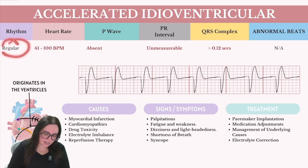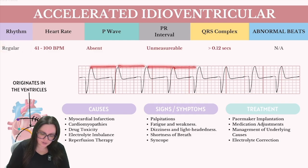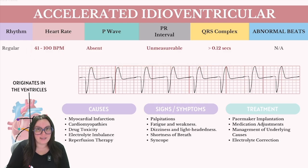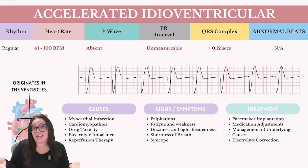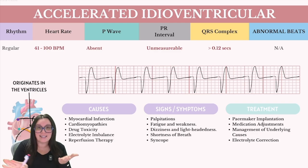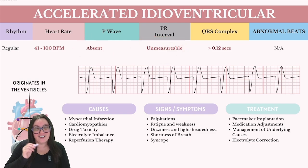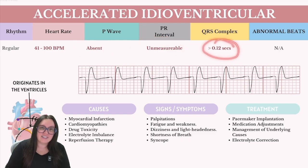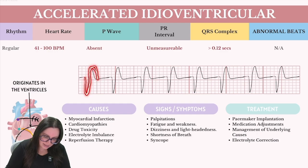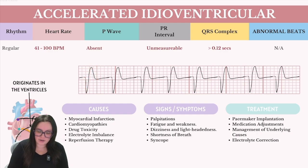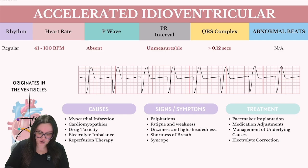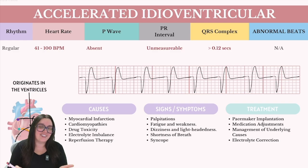Breaking down the rhythm: it's going to be regular — marching R to R, it falls in the exact same place. Heart rate is between 41 and 100 beats per minute, hence the name accelerated — greater than the intrinsic rate, less than 100. We're not going to have any P waves because there's no atrial activity; the SA and AV nodes are on vacation and the ventricles are taking over. No P waves and no measurable PR interval. The QRS complexes are going to be big, wide, and ugly — greater than 0.12 seconds. The causes, signs and symptoms, and treatment follow the exact same rules as regular idioventricular rhythms.